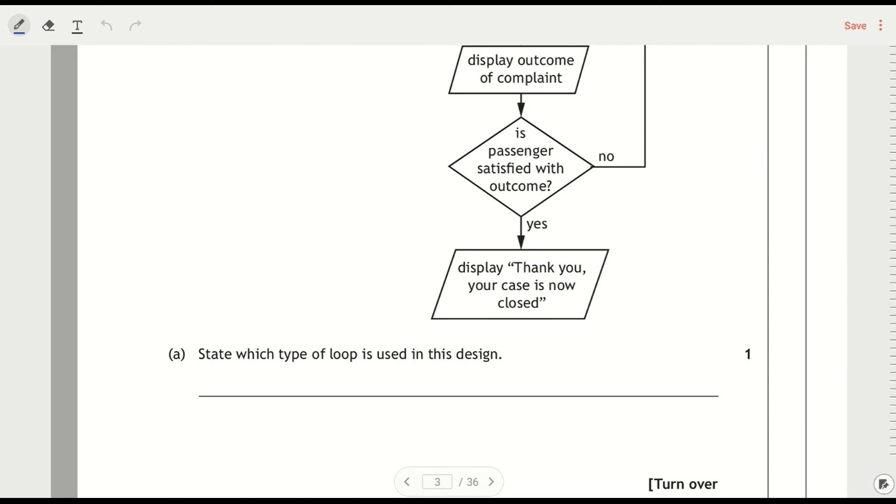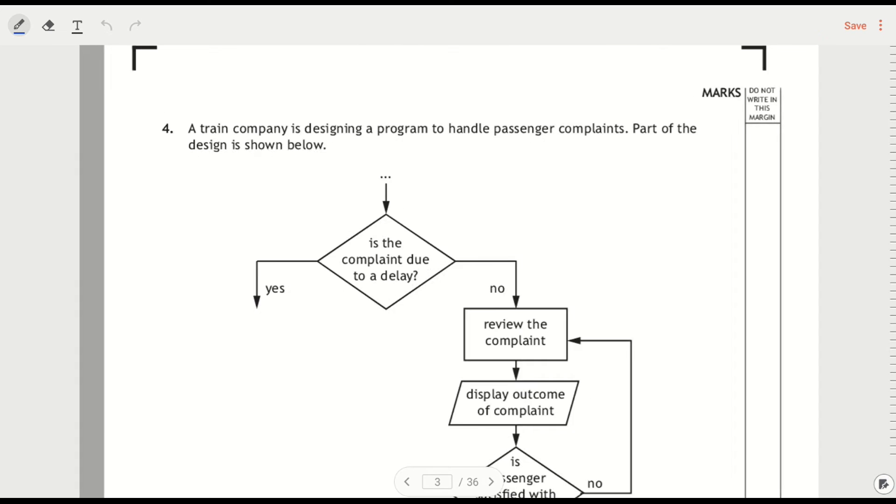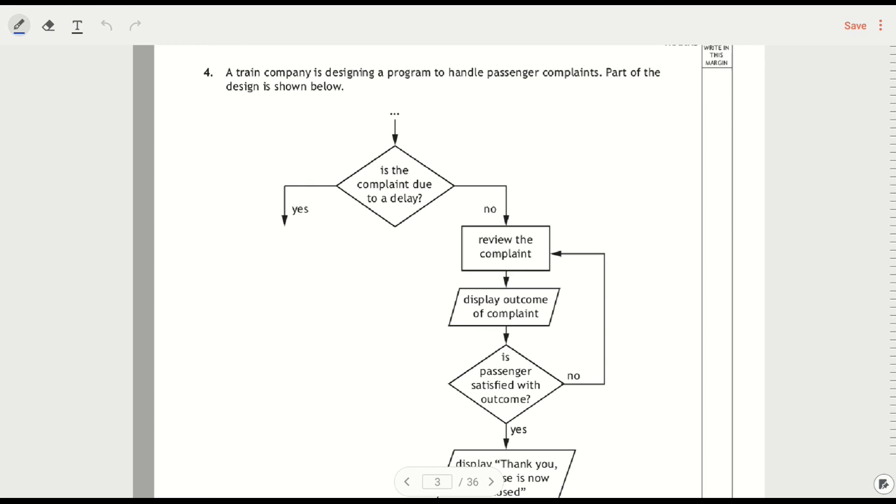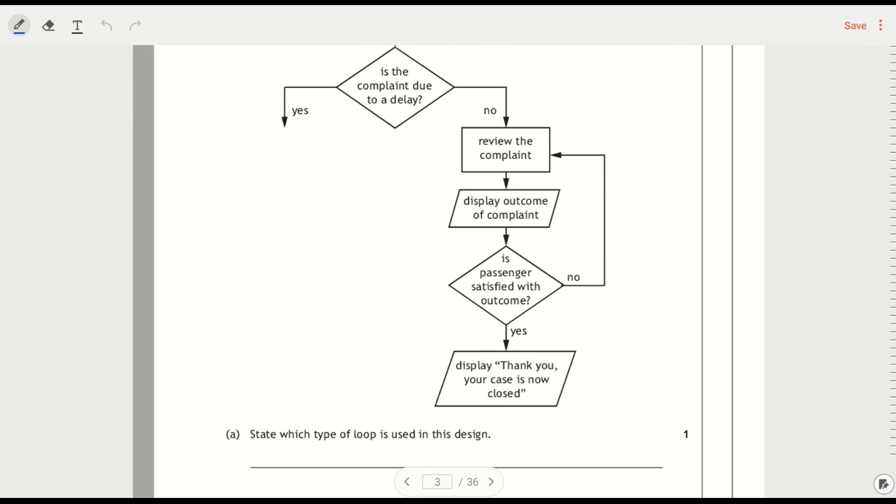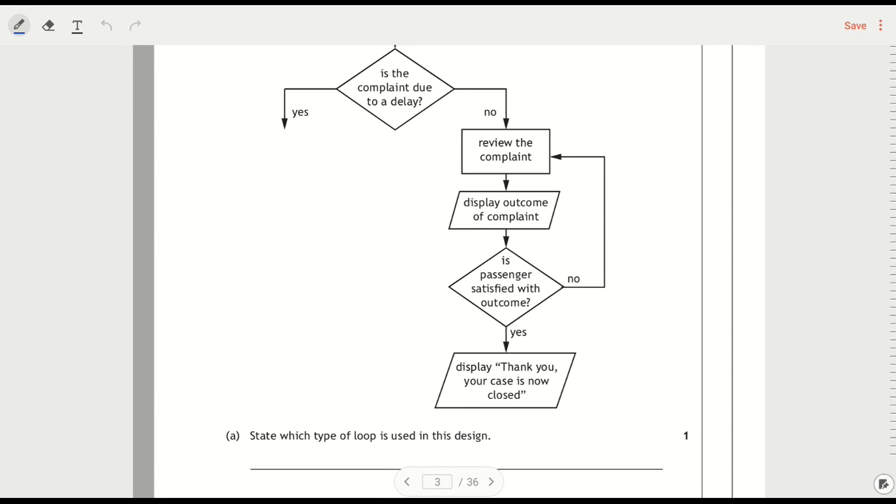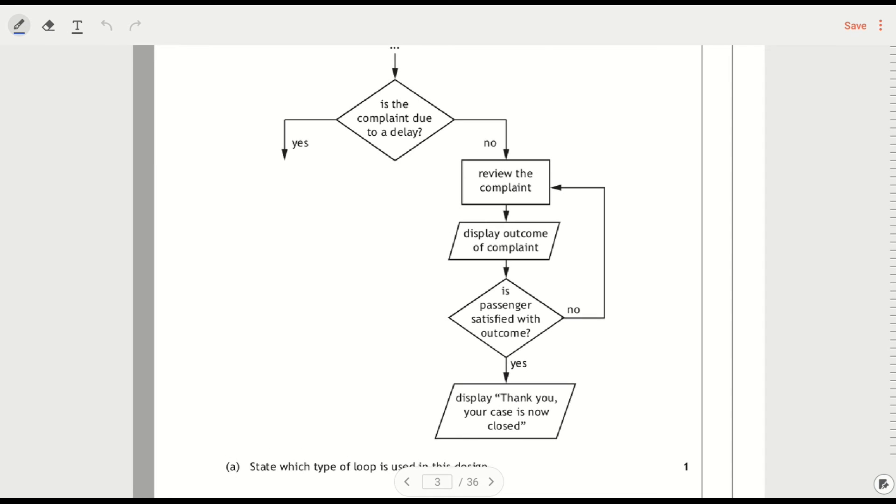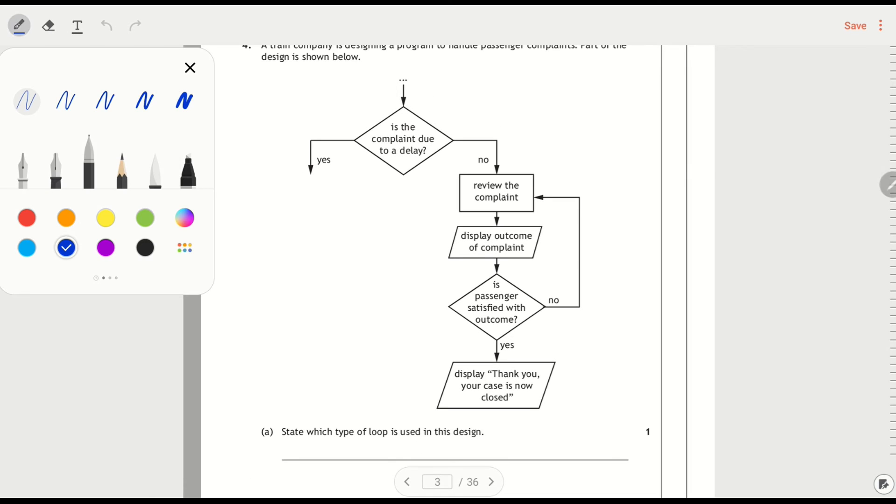And then I'm going to do the first part, question four, and I'm going to split this video into two. So a train company is designing a program to handle passenger complaints, and part of the design is shown below. It says state which type of loop is used in the design. So we've got a couple of conditions going on here, and I'm going to switch back to the highlighter again.